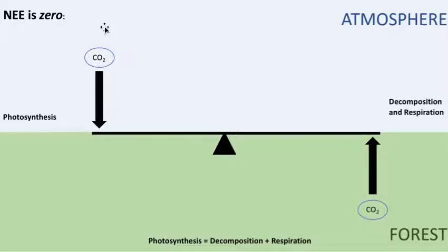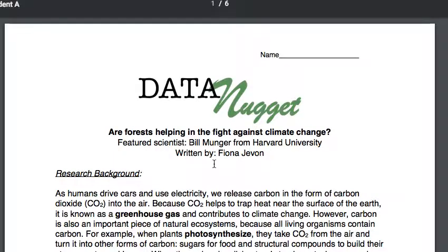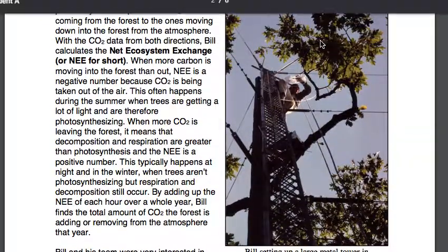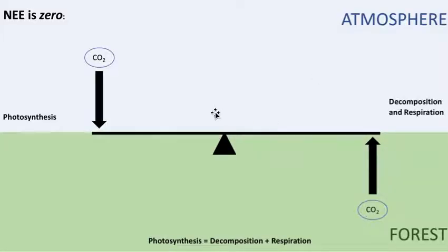When the same amount of carbon dioxide is getting pulled out of the atmosphere and put into the forest, and that is the same amount as the forest is giving off — so the amount it's photosynthesizing matches the rate that it's decomposing and respirating — then the NEE, which I believe stands for Net Ecosystem Exchange, meaning the difference of the two, is zero. If they're exactly identical, the amount of carbon dioxide coming out of the air is the same exact amount as going into the air. The total overall effect is zero.